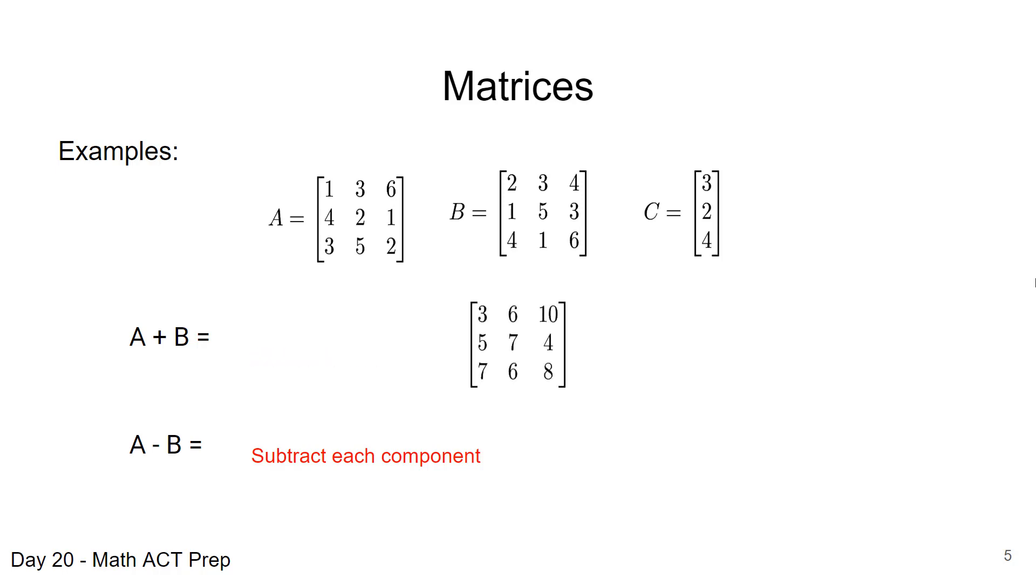When we add the components for A plus B, we just add across. One plus two gives us three. Three plus three gives us six. Six plus four gives us ten. That is the first row, that three, six, ten of the matrix A plus B. And we continue that for each component. Subtracting the same. Instead of adding the components, we subtract them. So that's adding a matrix.